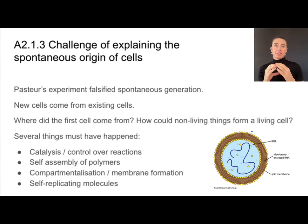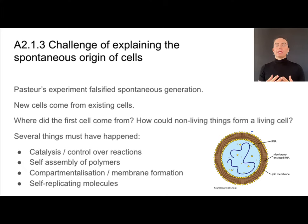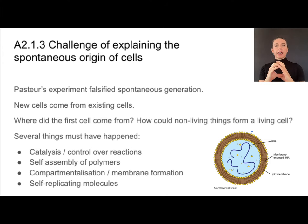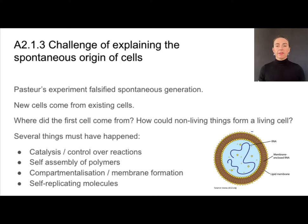If we think about the very first cell, here's what had to have happened in order for it to form. It first needed to have some kind of control over chemical reactions — metabolism is very complex and there needs to be some semblance of control over what reactions are and are not happening. There needs to be some kind of self-assembly of polymers: taking amino acids and making proteins, or nucleotides and making DNA. It needs to be compartmentalized, separating itself from the outside environment, and it needs self-replicating molecules. All of these must have come together to form that first cell.